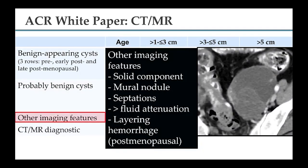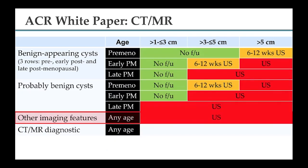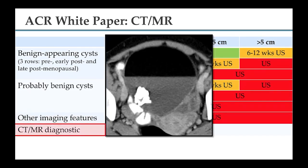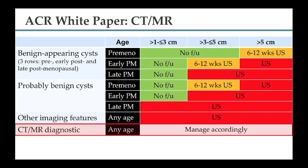Lesions with other imaging features — worrisome findings such as a solid component, mural nodule, septations more than fluid attenuation, or layering hemorrhage in an older woman — are considered suspicious, and ultrasound is recommended. For lesions with diagnostic imaging features such as dermoid, when you know the diagnosis, you manage accordingly. That is the summary of the ACR white paper.